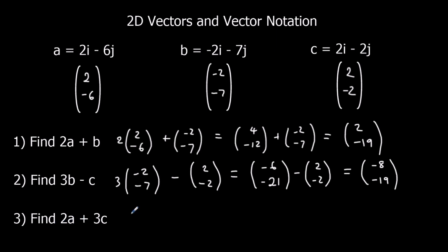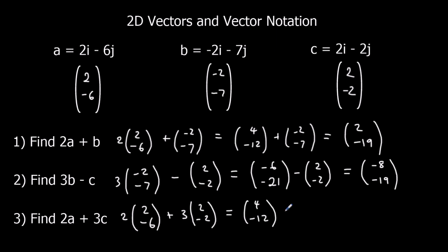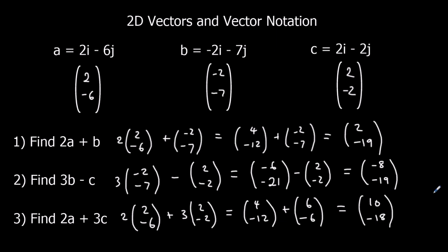And finally, 2A plus 3C: 2 of the (2,-6)'s plus 3 of the (2,-2)'s, which is (4,-12) plus (6,-6). Along the top: 4 plus 6 is 10. The bottom: -12 minus 6 is -18. So the answer is 10i minus 18j.